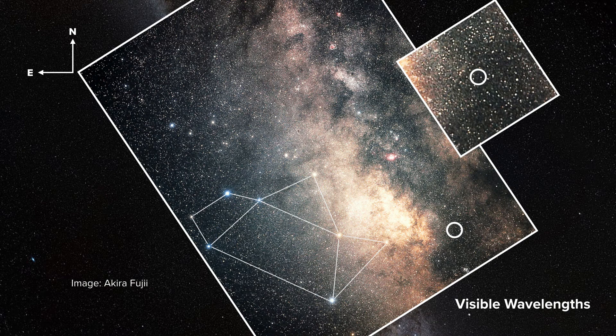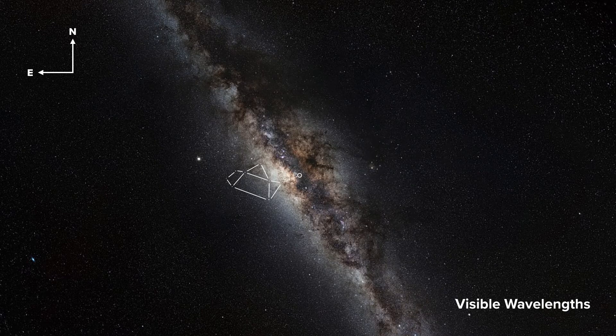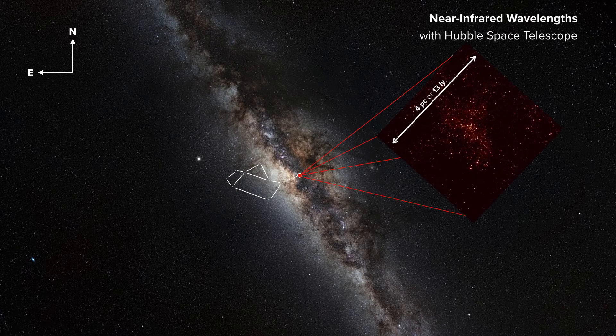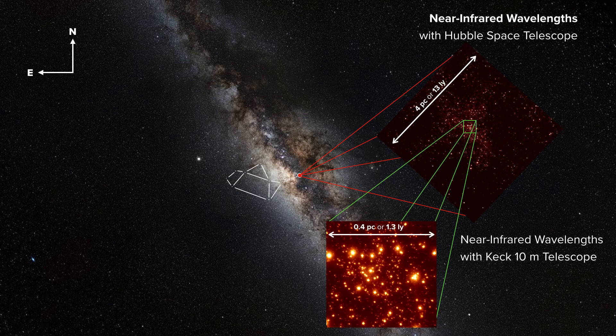When we zoom in, we find that we can't really see much at the very center at visible wavelengths. But we can look at the center using longer wavelengths, such as near-infrared wavelengths. When we do that with a telescope like the Hubble Space Telescope, we can start to see the stars at the very center of the galaxy. This red picture is taken of the very center — about 13 light years of our galaxy — taken with the Hubble Space Telescope. The Galactic Center Group at UCLA uses an even bigger telescope called the Keck Telescope in Hawaii, and using this telescope we can see the stars at the very center of the galaxy, right next to the supermassive black hole.